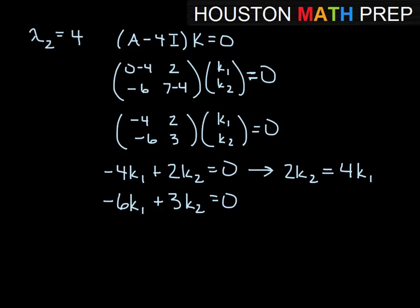Maybe I'll even reduce that, divide both sides by 2. So in other words, K₂ equals 2 times K₁. So if K₁ were equal to 1, then K₂ would be 2 times that, so K₂ would equal 2. So the corresponding eigenvector that goes with the eigenvalue of 4 is 1, 2.